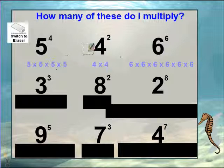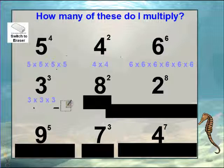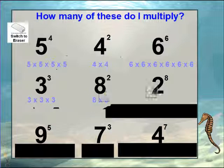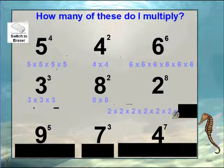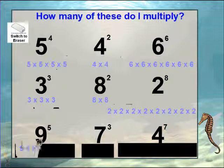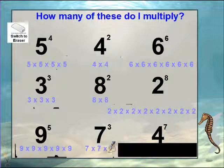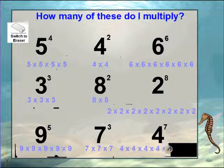All right, welcome back — let's check how you did. Three to the third gives three threes. Eight squared gives two eights. Two to the eighth power gives eight twos. Nine to the fifth gives five nines. Seven to the third gives three sevens. And four to the seventh gives seven fours.